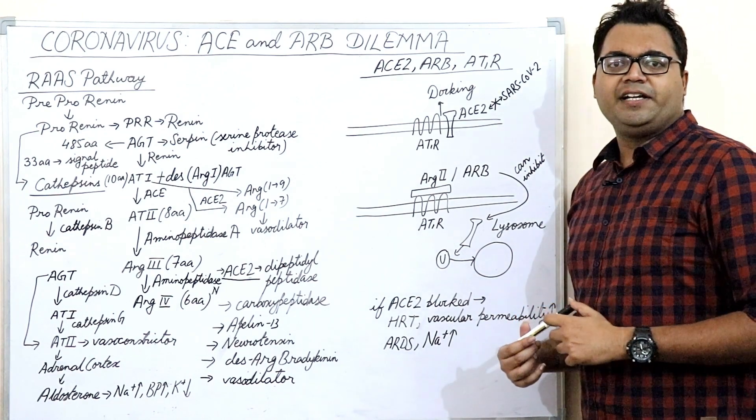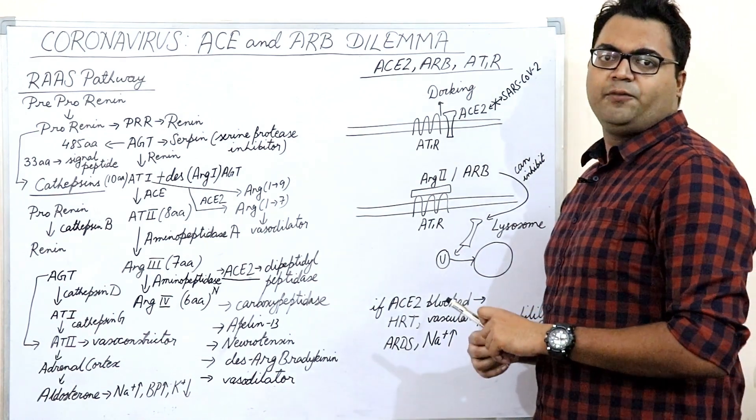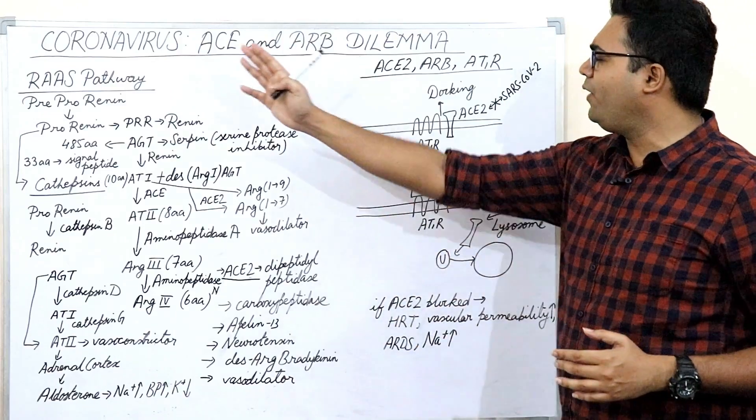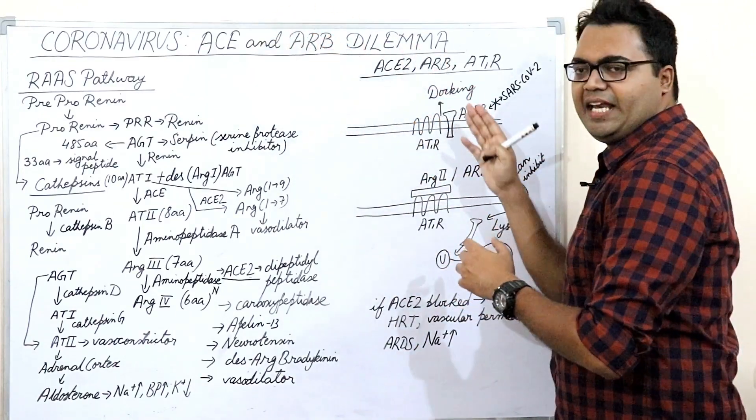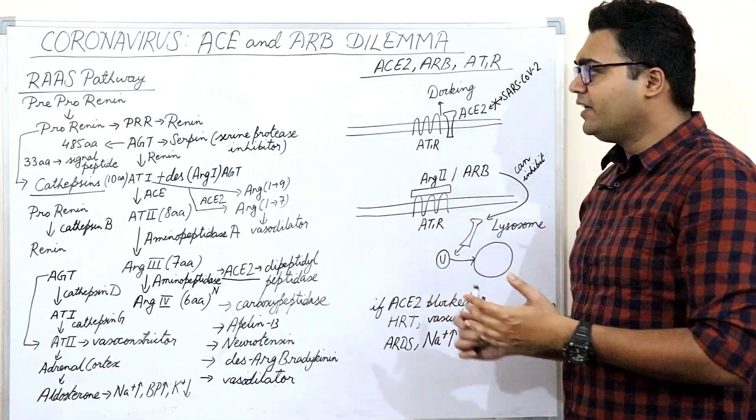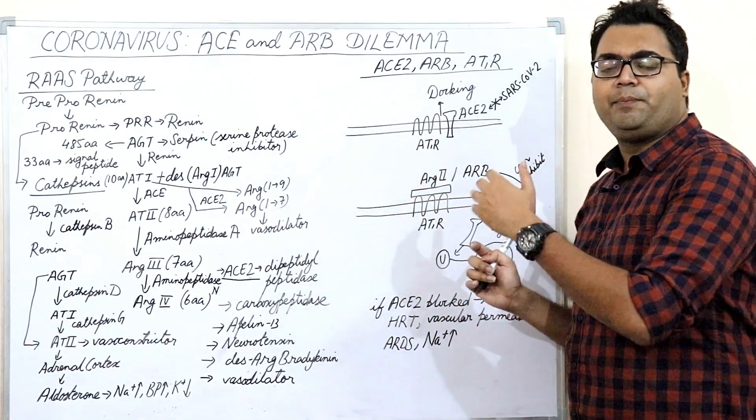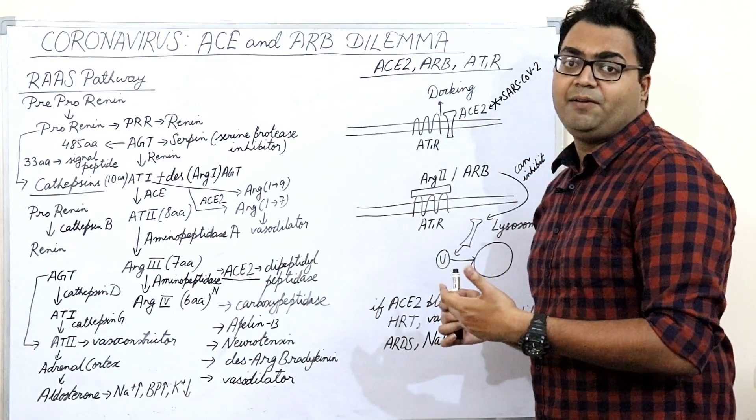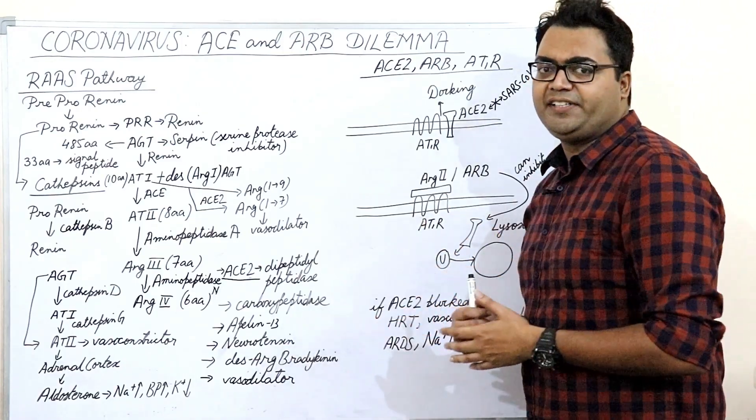Hello friends, welcome to yet another intriguing edition of Rahul's Advanced Biology. Today I will be dealing with a very ecstatic topic known as the coronavirus, the ACE and ARB dilemma. First of all, I would like to inform you that the WHO has already declared COVID-19 or SARS-CoV-2 as a global pandemic. More than 8,000 people have lost their lives, more than 200,000 have been affected by it.